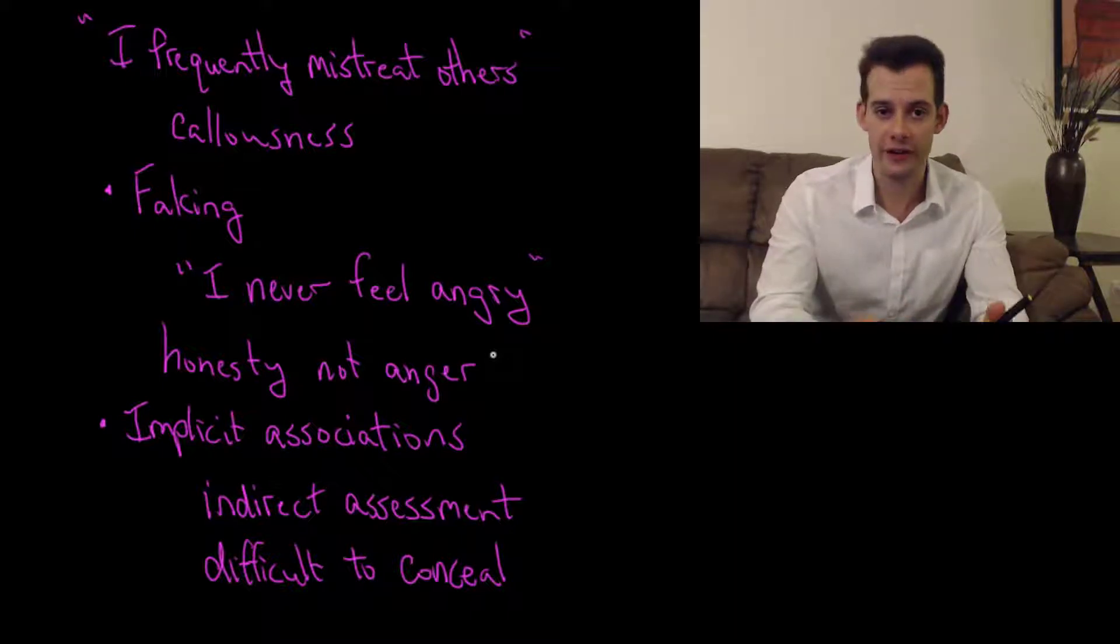We can therefore measure something that maybe has a negative connotation indirectly. Now we'll talk about this again in a future video when we talk about the implicit association test which is used to assess implicit prejudice. And we'll see that there's a number of problems with using implicit measures. This is not a perfect solution to the problem.